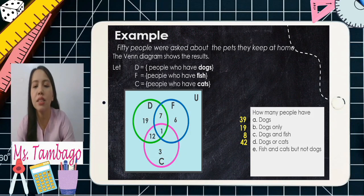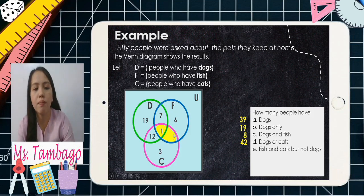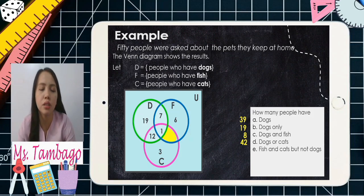Letter E: fish and cats. Again, 'and' means intersection — common elements only, between the blue circle (fish) and the pink circle (cats). That is the part where they overlap, but not dogs. We remove the part that is also in the green circle. There is no number there, so that equals zero.